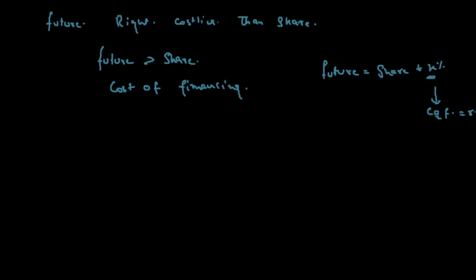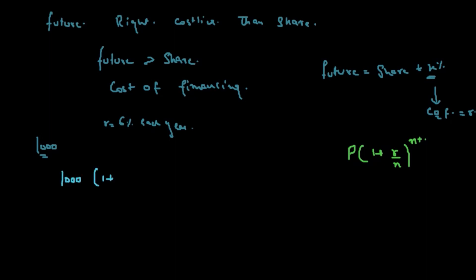Let's suppose the price of a share is 1000 right now and the risk-free rate R is 6% per year. Using the compounding formula — Principal × (1 + rate/n)^(n×t) — the principle is 1000, rate is 0.06, n equals 1, and t equals 1. This gives us 1000 × (1 + 0.06) = 1060.